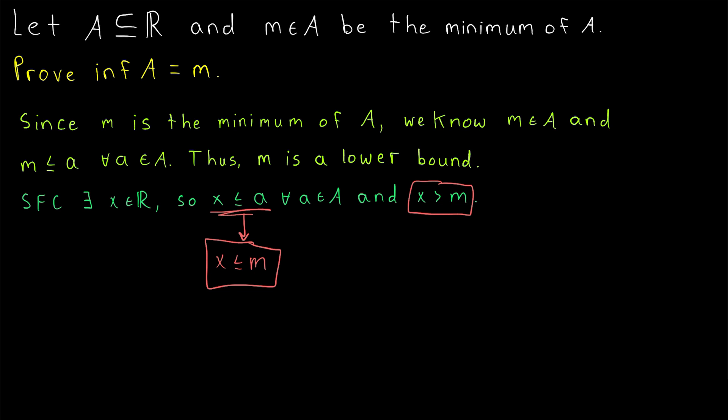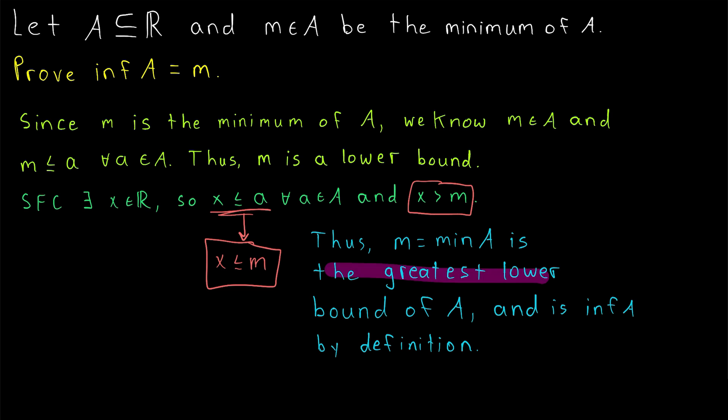Thus, there cannot be a lower bound of A that's greater than M, and so M is the greatest lower bound. So we've proven that M, which is the minimum of our set A, is the greatest lower bound of A, and thus it's the infimum of A by definition.